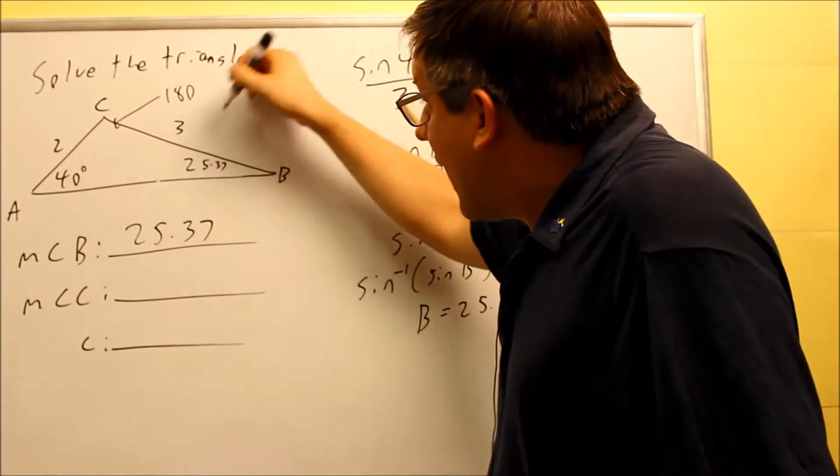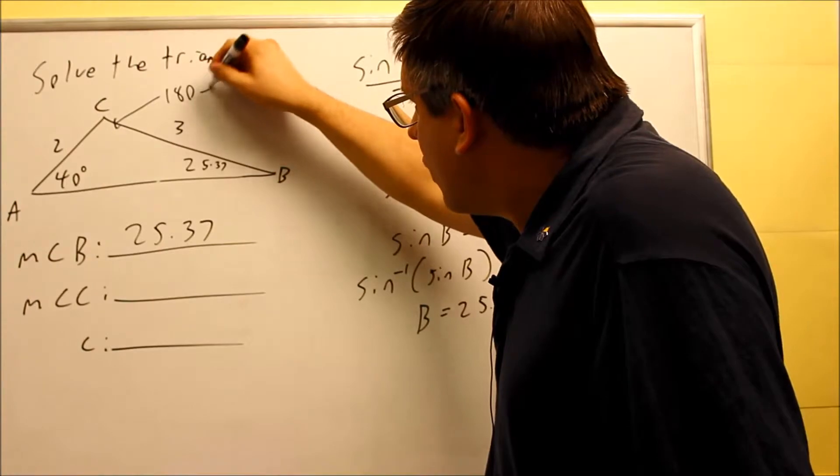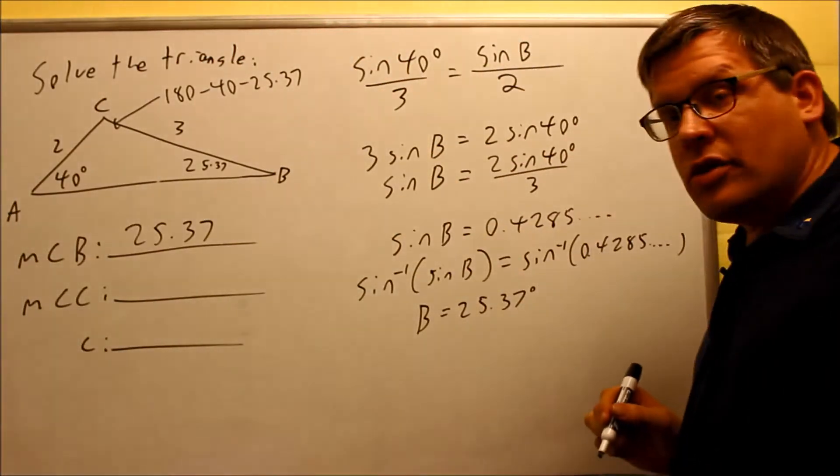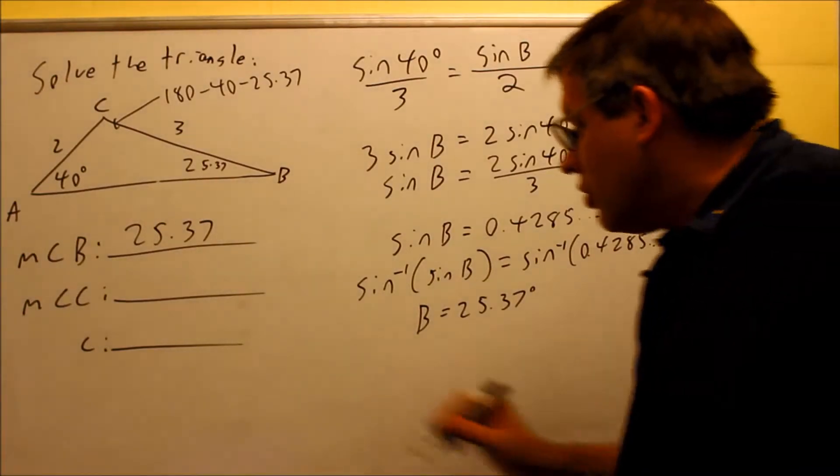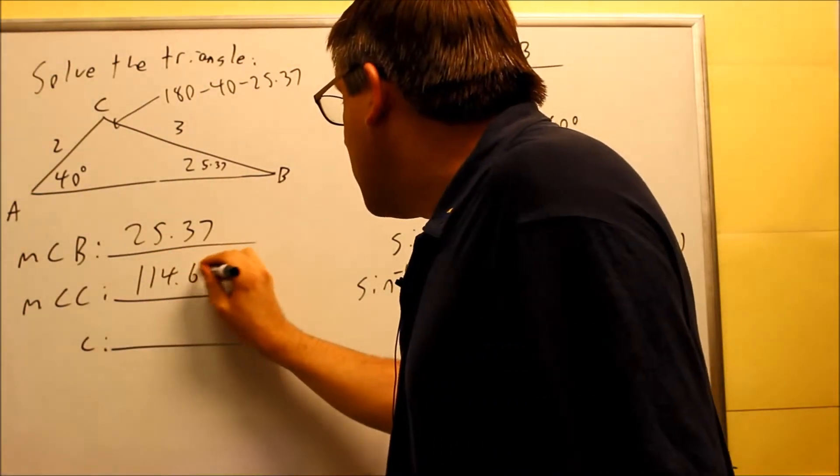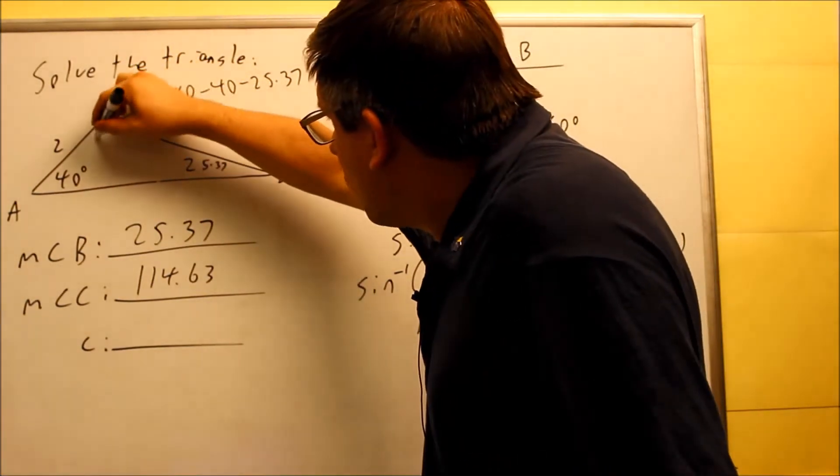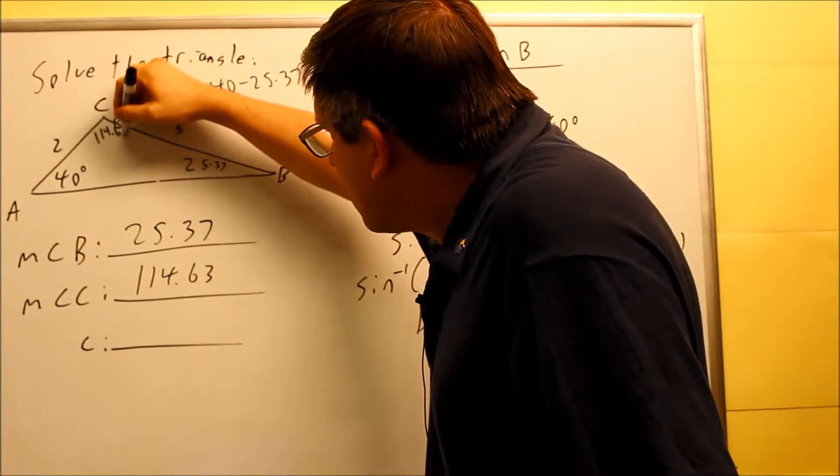subtracting these angles you already have in the triangle, subtract from 180. So 180 minus 40 minus 25.37. If you do that, you're going to be left with 114.63. So now that gives us this angle here, 114.63.